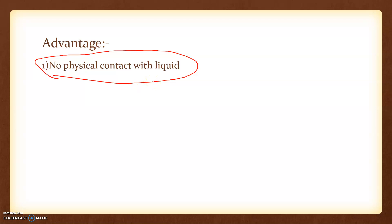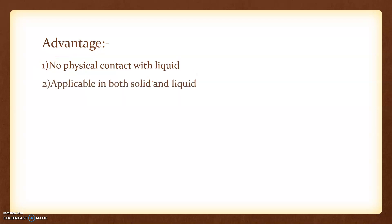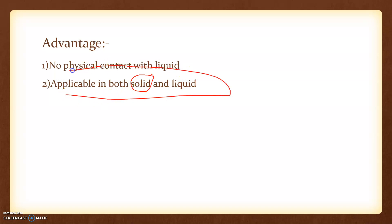So the major advantage of the ultrasonic sensor is: there is no physical contact with the liquid. Another very interesting advantage is that it is applicable to both solids and liquids. With a capacitive sensor, using parallel plates in a solid is difficult — the plates may get scratched, may break, and the gap between the plates may also change. So a capacitive sensor is not a good idea for measuring solid levels, whereas the ultrasonic sensor is situated above the container and does not come in contact with the solid or liquid at all.